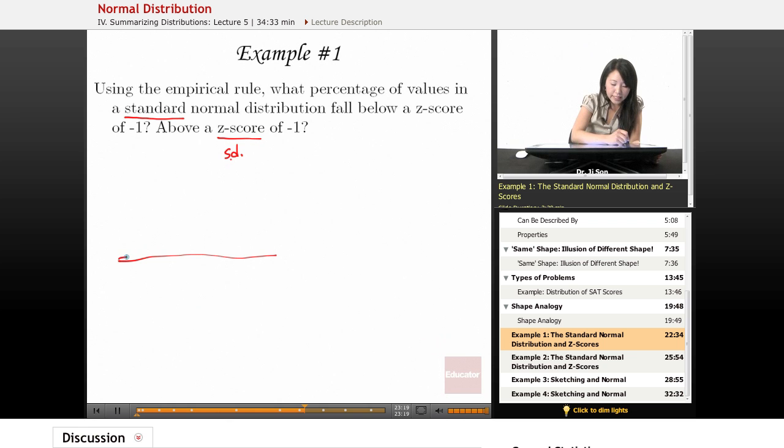We could easily do this problem just by knowing the empirical rule. In a standard normal distribution, we pretend like we don't know the actual values. Well, you don't have to pretend - we really don't know. Instead, we just know the standard deviations or what we call the z-scores. Now, what they want to know is what percentage of values fall below a z-score of negative one.